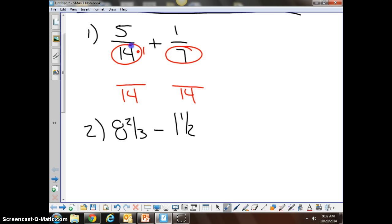We know that 14 times 1 is 14, so we have to do the same thing to the top, 5/14ths stays 5/14ths. We know that 7 times 2 is 14, so we have to multiply the top by 2 as well, and we get 2/14ths.